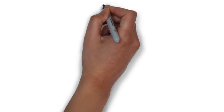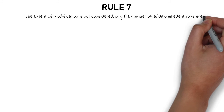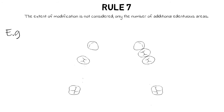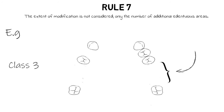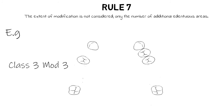Rule 7 states that the extent of modification is not considered — only the number of additional edentulous areas is considered. For example, with many edentulous areas, the base classification is Class 3, and if there are three additional edentulous areas beyond the one determining the classification, it becomes Class 3 modification 3. Even if multiple teeth are missing within each area, each area still counts as a single modification. The number of teeth absent is irrelevant; only the number of edentulous areas matters.